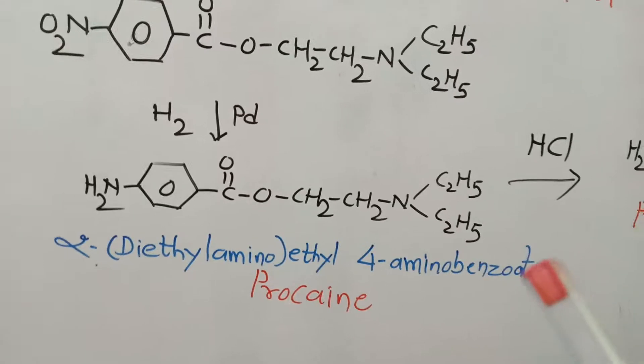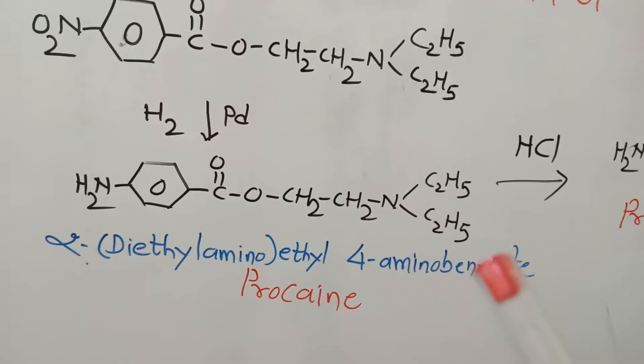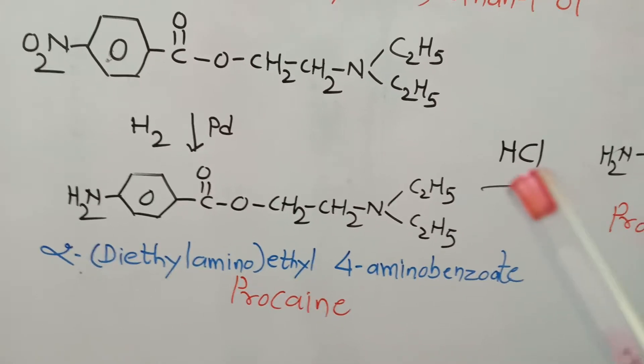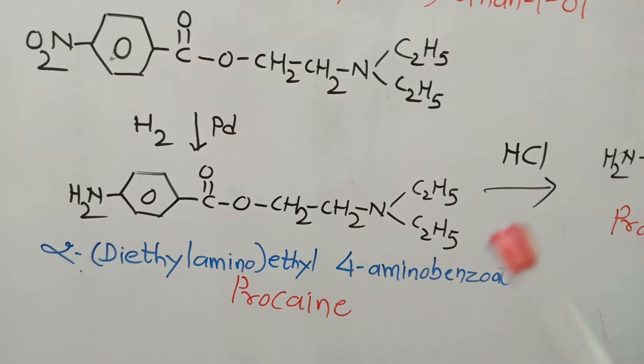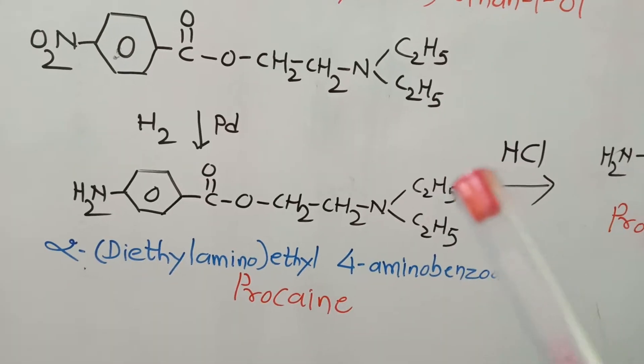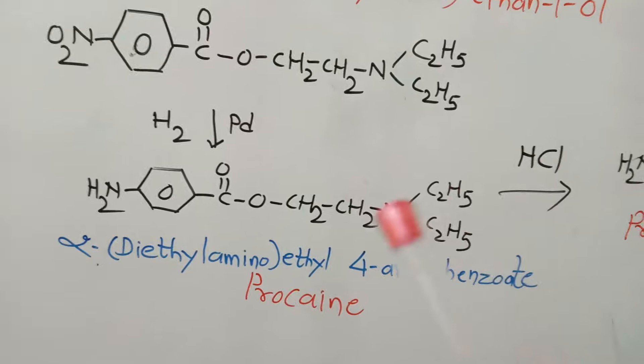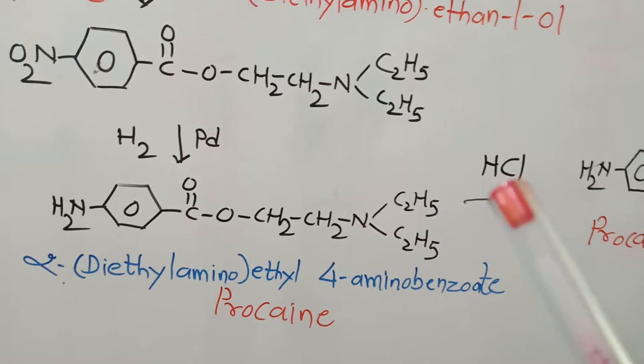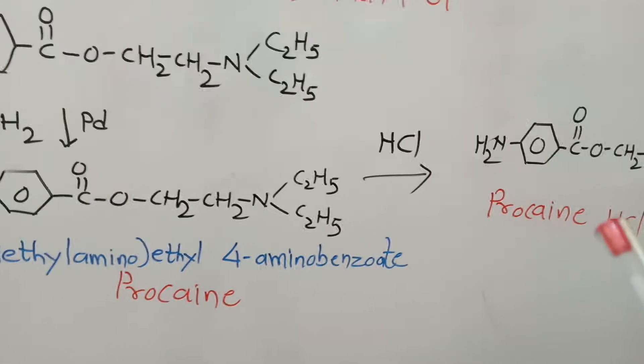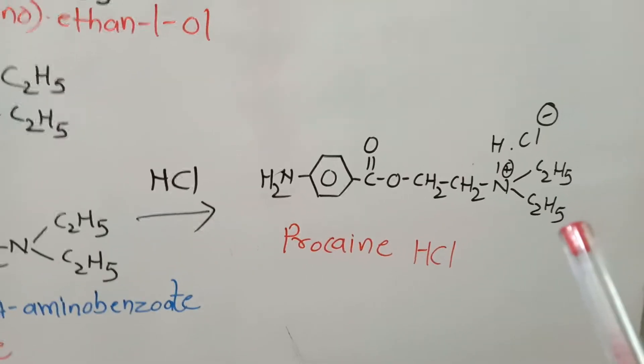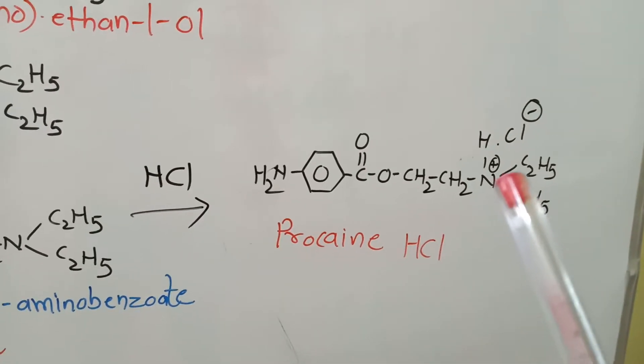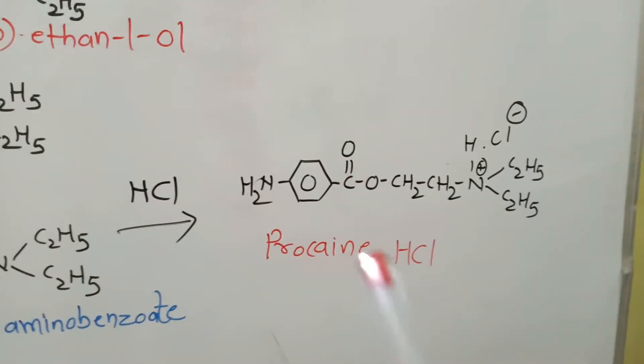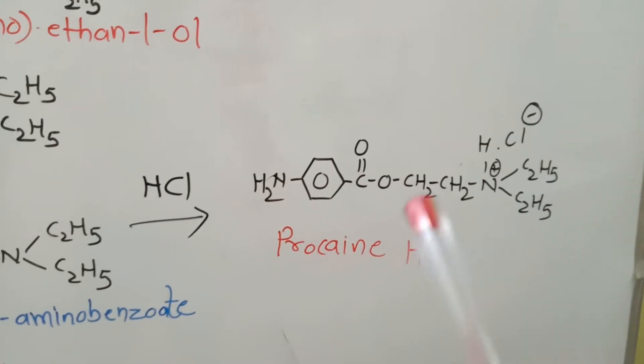Procaine, being a non-polar compound, is not soluble in water. To make it water-soluble, it is reacted with hydrochloric acid. The amino group reacts with the acid to form a quaternary salt with positive and negative poles, thus the compound becomes polar and water-soluble.